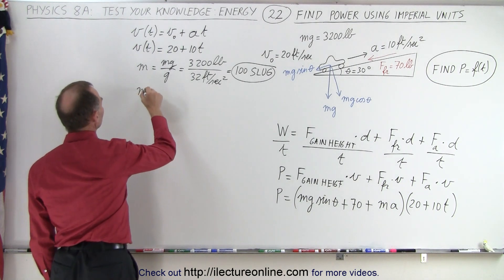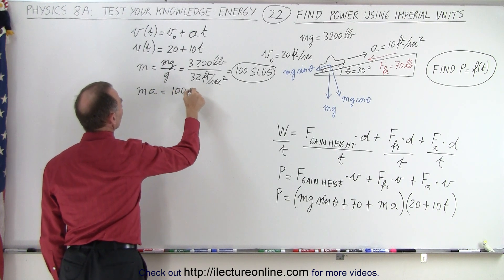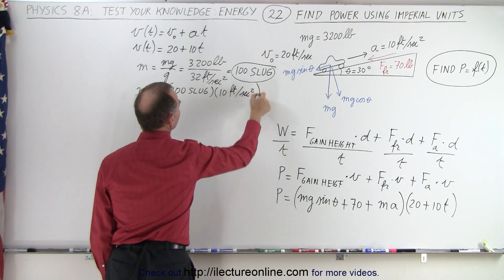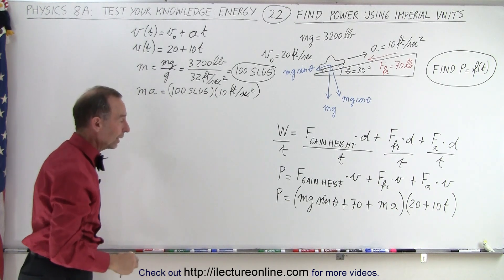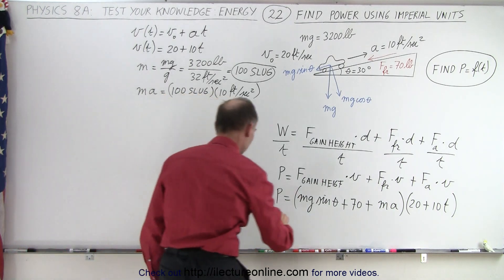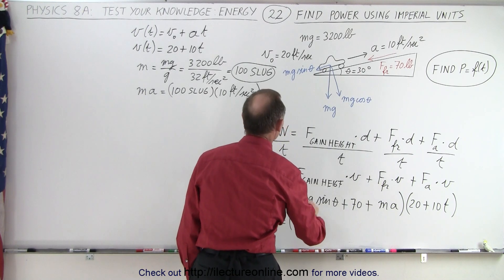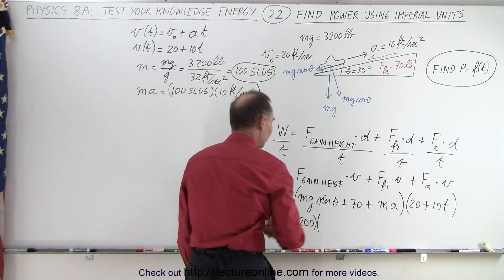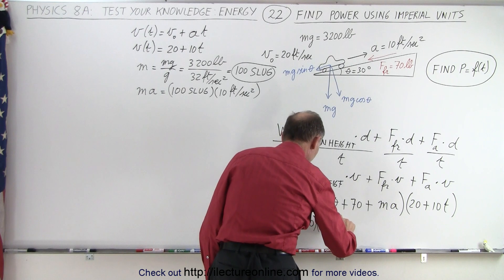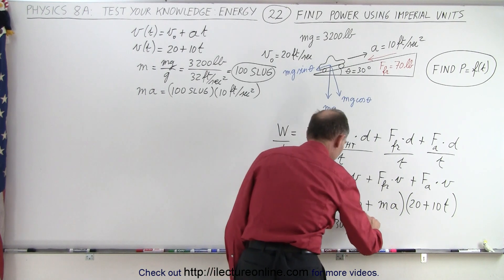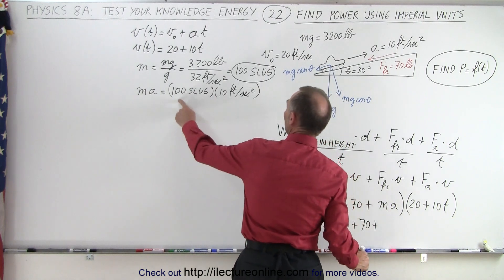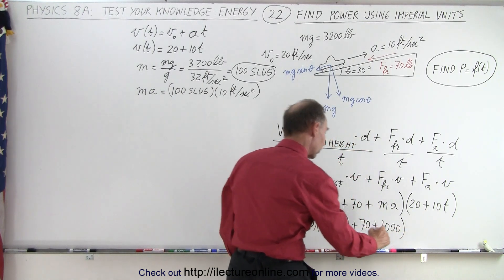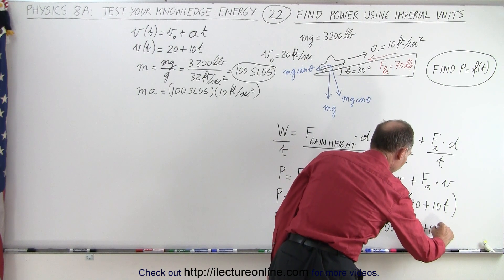Mass times acceleration equals 100 slugs multiplied by 10 feet per second squared, so the force required to accelerate the car is 1000 pounds. Plugging everything in: power equals mg which is 3200, times sine of 30° which is one-half, plus 70, plus m·a which is 100×10 = 1000, and all of that multiplied by (20 + 10t).